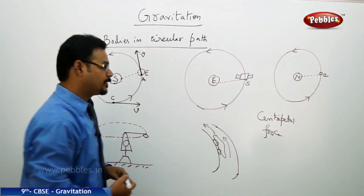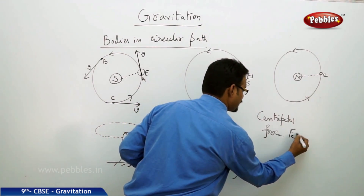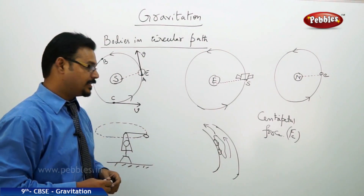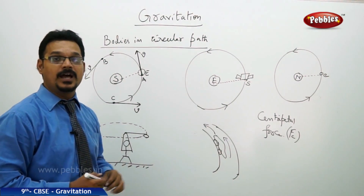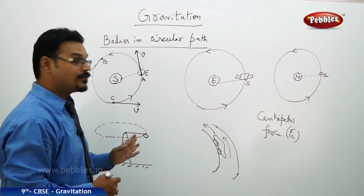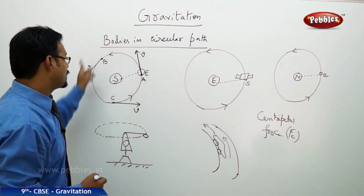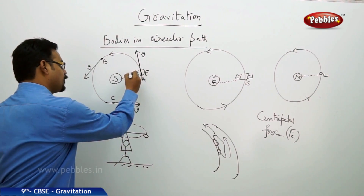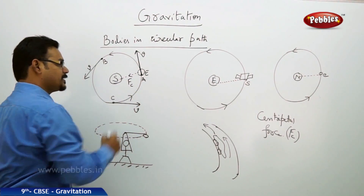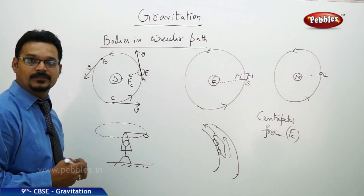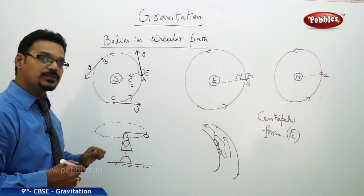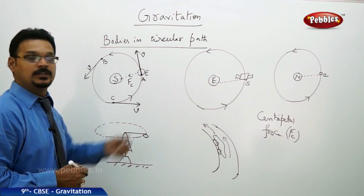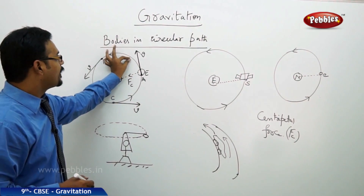Centripetal force — symbol FC — is the force acting in circular motion, and it always acts towards the center of the circle. For the Earth, the center of its circular orbit is the Sun. So the centripetal force acts towards the Sun, making sure that the Earth is pulled towards the Sun at each and every point.